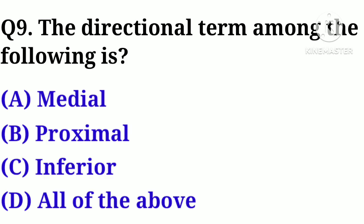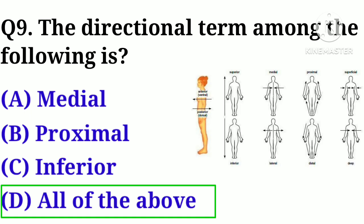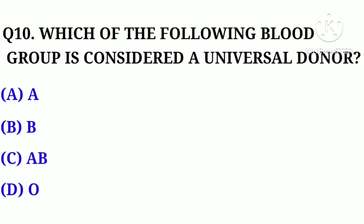Question number 9. The directional term among the following is: Option A. Medial, B. Proximal, C. Inferior, D. All of the above. Correct answer: Option D. All of the above.